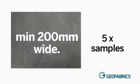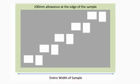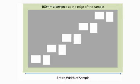Five rectangular specimens per sample direction are required. Each specimen is required to be 200 millimetres wide. The specimens are sampled so that they are as widely spaced as possible over the whole surface of the sample, so that their positions are symmetrically different in the longitudinal and cross directions.